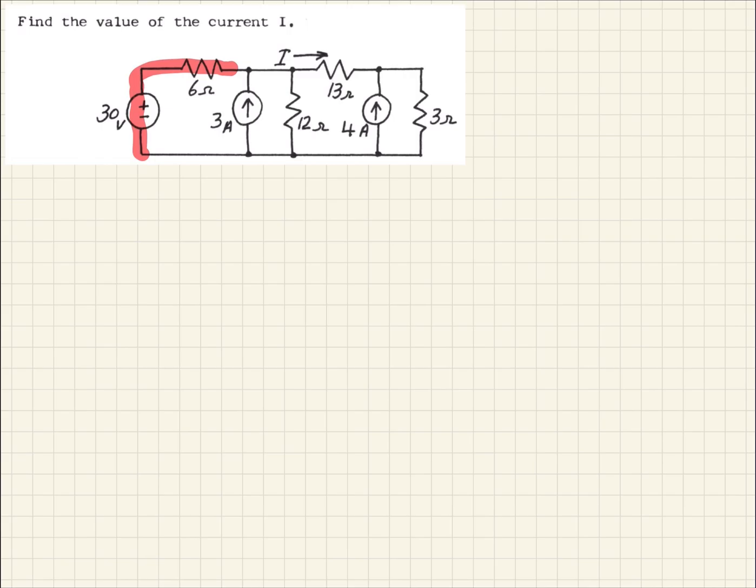We should be able to recall from the literature that when we have this, we can replace that with a current source with a resistor in parallel with it. So what does this look like? What we would have then is if we have a voltage source here...